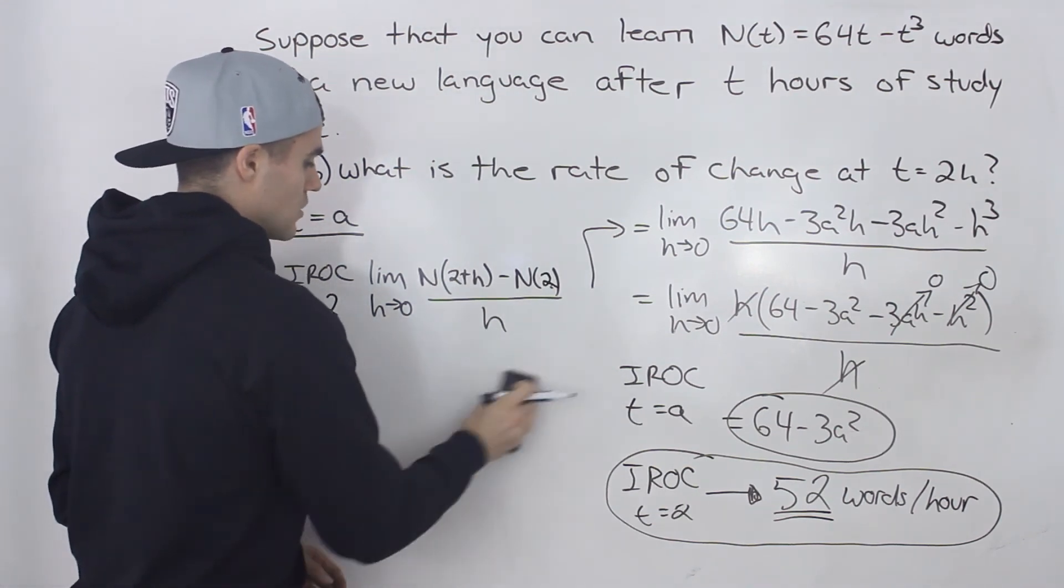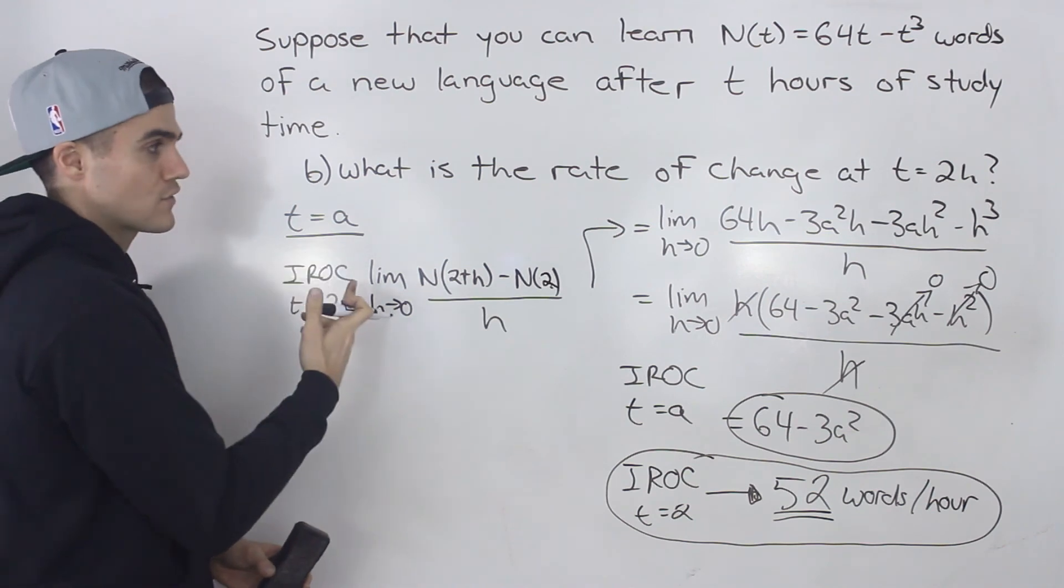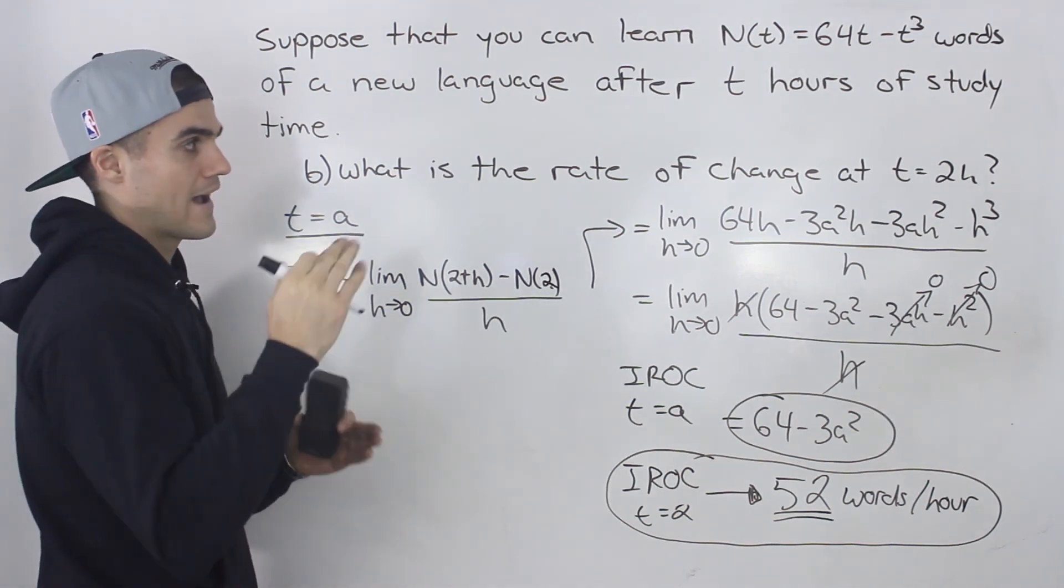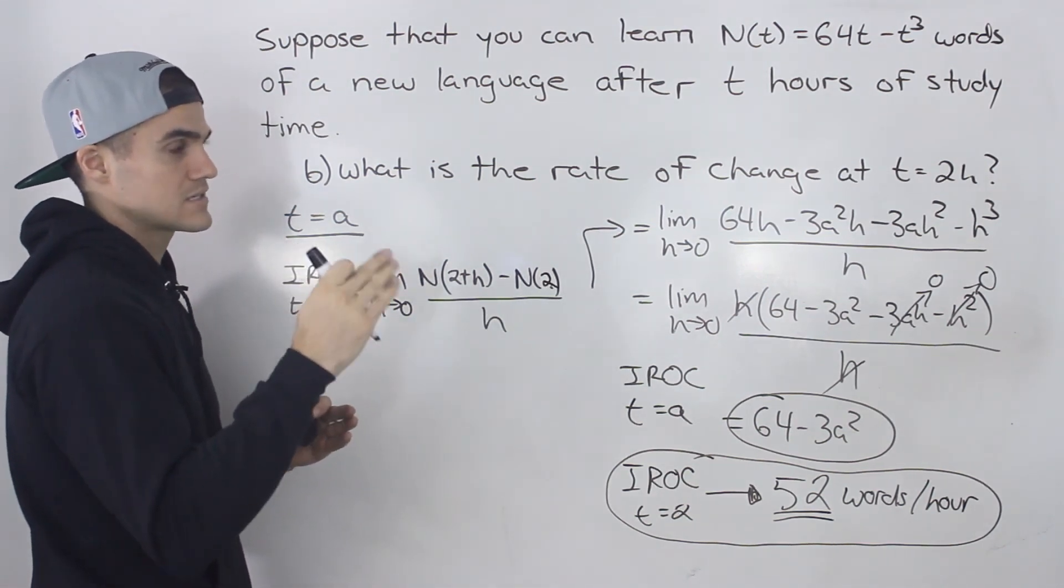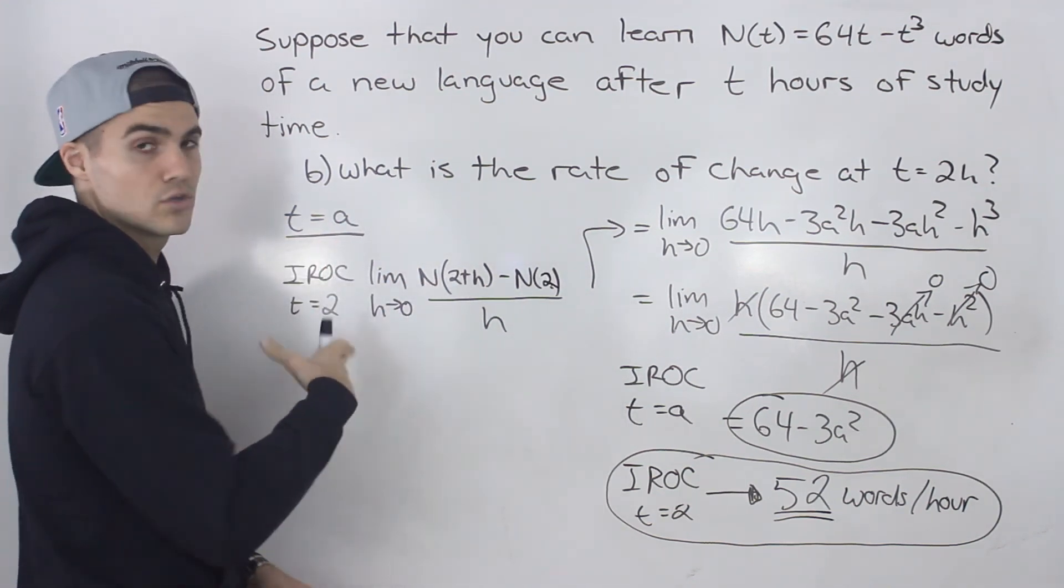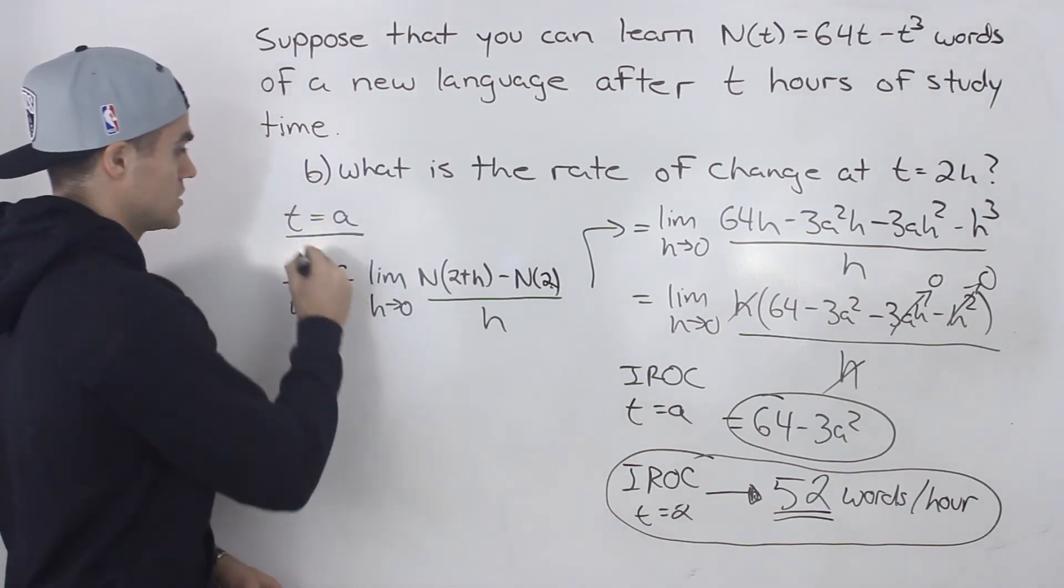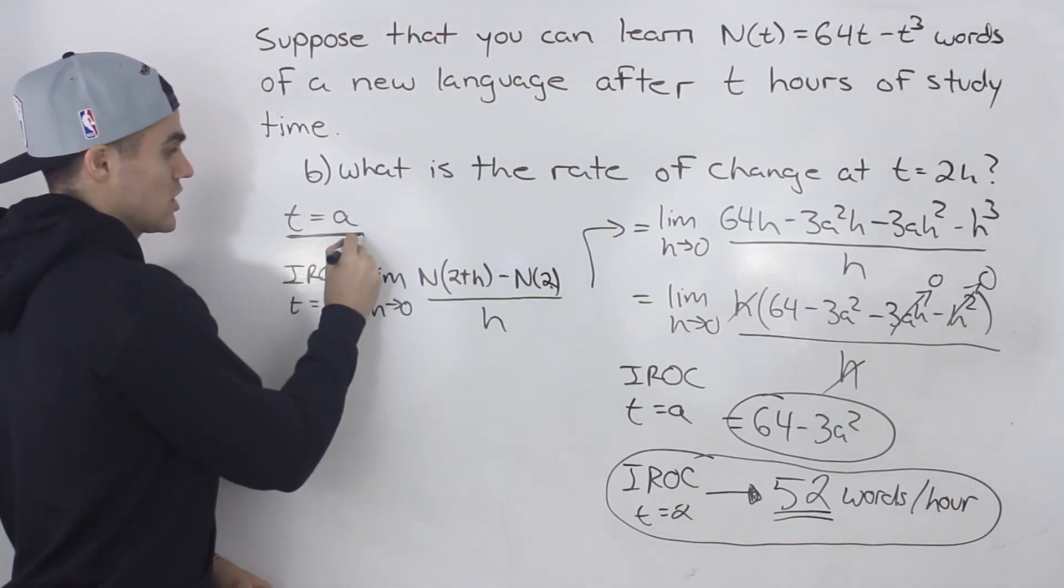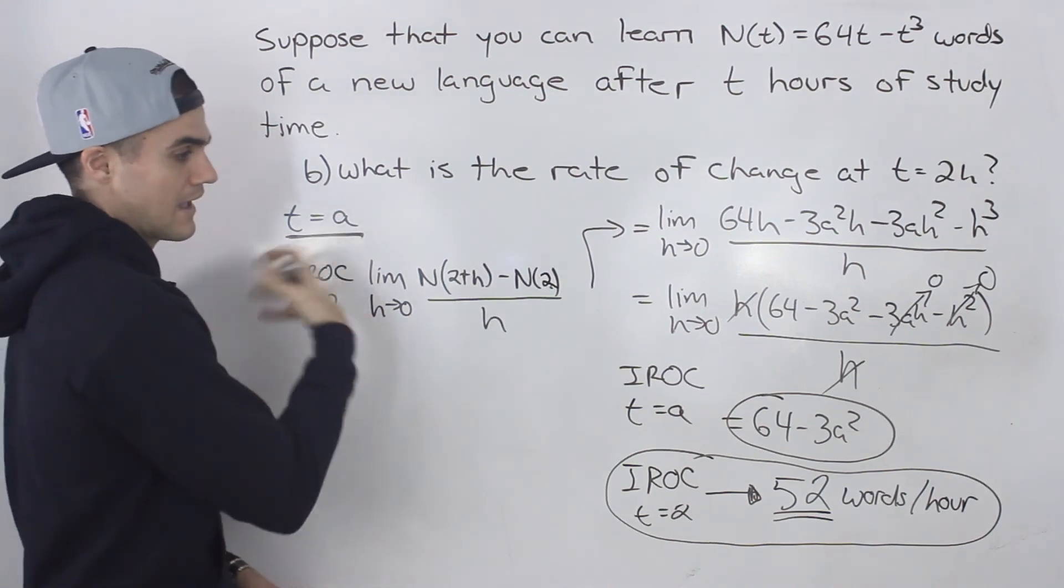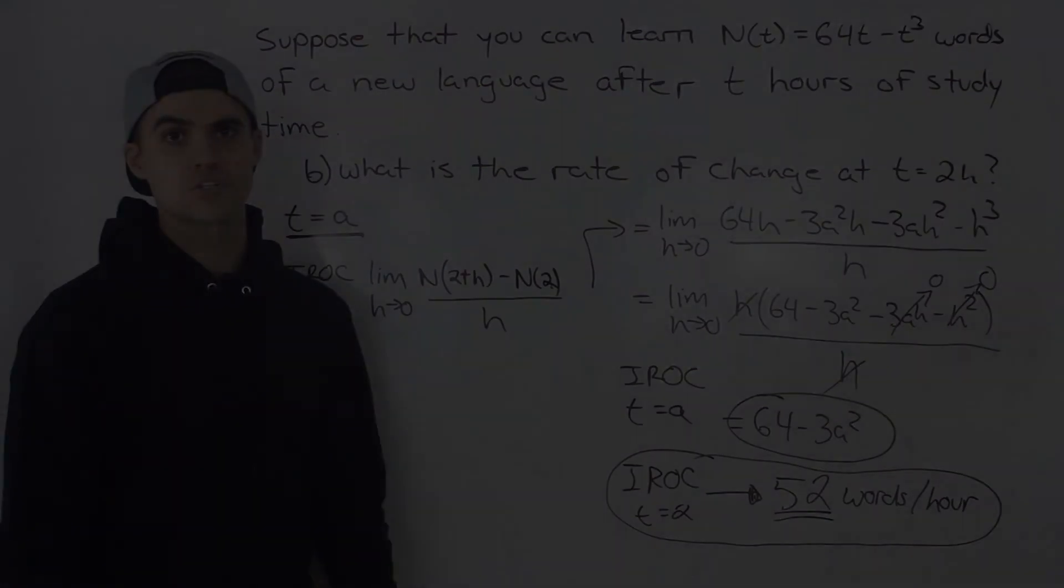However, I like to always find a general expression for a t value of A first, just in case that they are asking for the instantaneous rate of change at different t values, you don't have to make multiple calculations, you only have to make one calculation then. So my suggestion, do it for a general value of A, and then plug in that specific A that you are working with in your question.